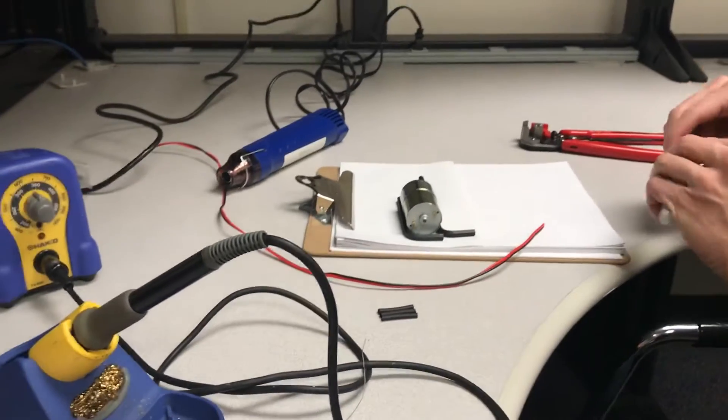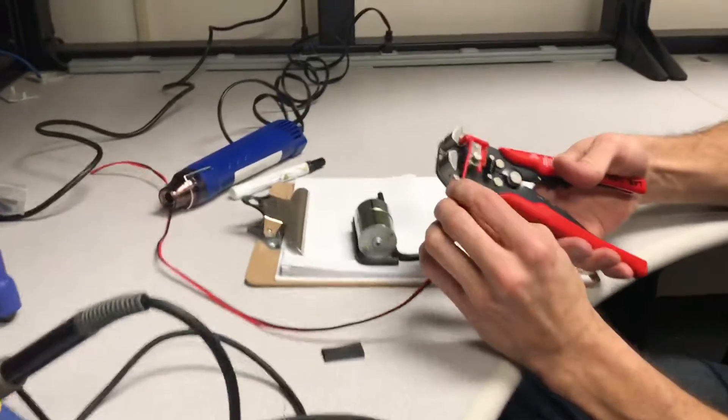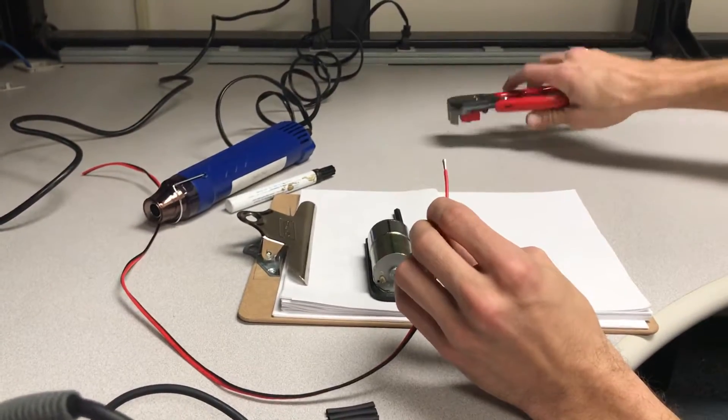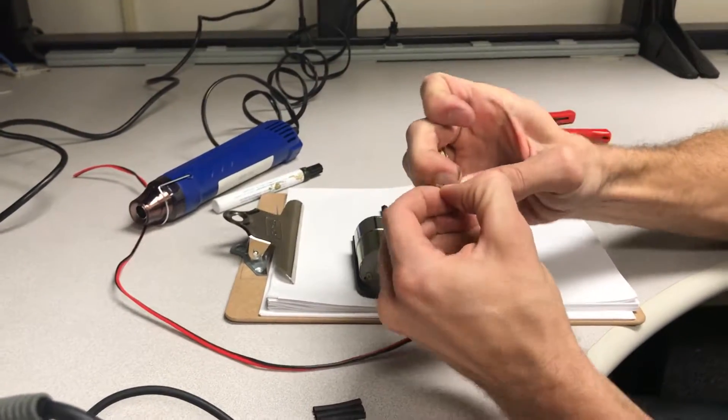Then take your power wire, 18 gauge, and go ahead and strip at least 10 millimeters of insulation off the wire. Then separate these two, negative and positive.